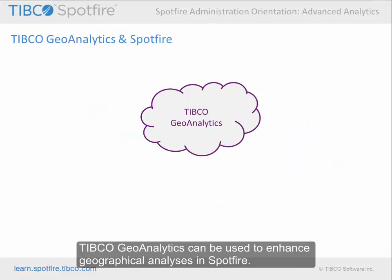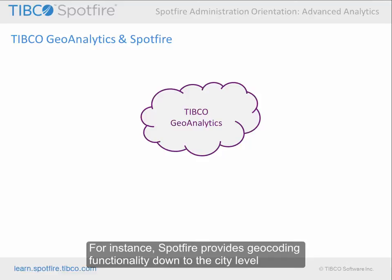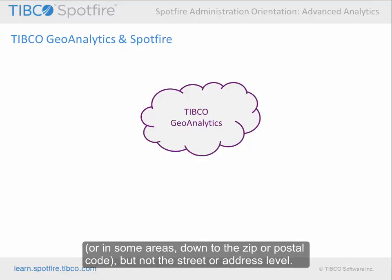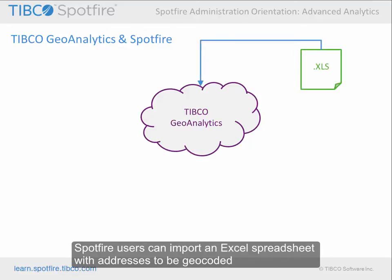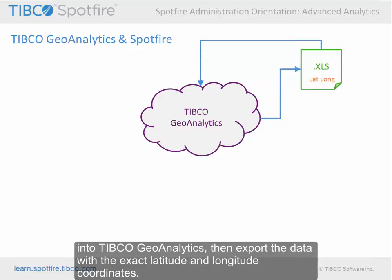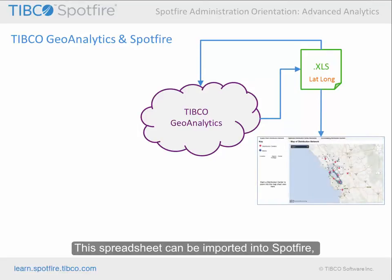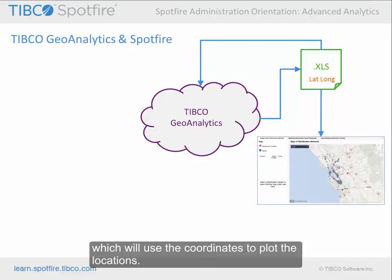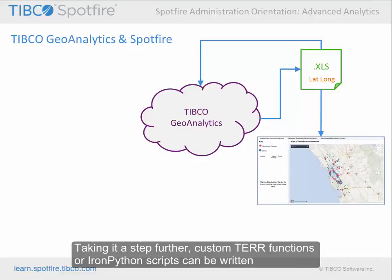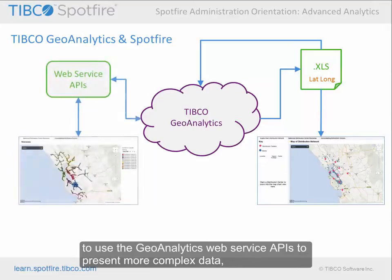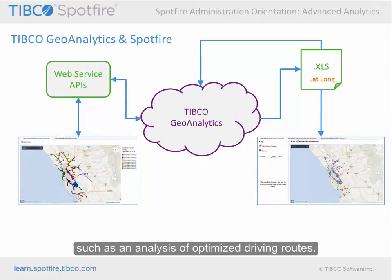TIBCO GeoAnalytics can be used to enhance geographical analyses in Spotfire. For instance, Spotfire provides geocoding functionality down to the city level, or in some areas down to the zip or postal code, but not the street or address level. Spotfire users can import an Excel spreadsheet with addresses to be geocoded into TIBCO GeoAnalytics, then export the data with the exact latitude and longitude coordinates. This spreadsheet can then be imported into Spotfire, which will use the coordinates to plot the locations. Taking it a step further, custom TAIR functions or Iron Python scripts can be written to use the GeoAnalytics Web Service APIs to present more complex data, such as an analysis of optimized driving routes.